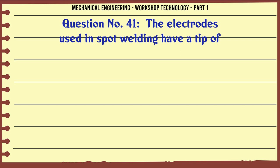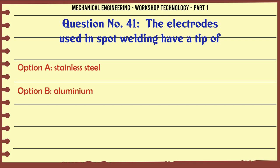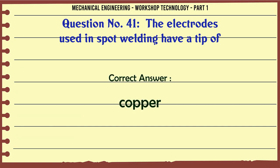Electrodes used in spot welding have a tip of: A. Stainless steel. B. Aluminium. C. Copper. D. Brass. The correct answer is: Copper.